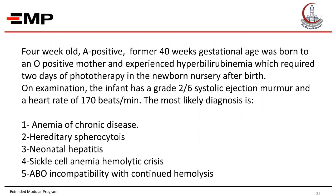Case scenario: A four-week-old newborn, blood group A positive, born at 40 weeks gestational age to an O positive mother, experienced hyperbilirubinemia requiring two days of phototherapy after birth. On examination, the infant has a grade 2 over 6 systolic ejection murmur and heart rate of 170 beats per minute. The most likely diagnosis is — read all five choices and we will discuss the answer in the face-to-face session.